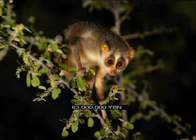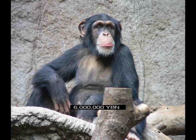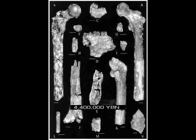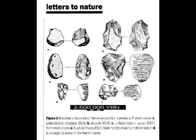Rodents. Primates. Opposable thumb. Primate loses tail. Chimpanzees. Ardipithecus — earliest bipedal primate. Homo habilis — the human brain starts getting bigger. Stone tools.